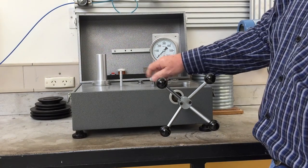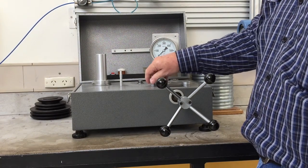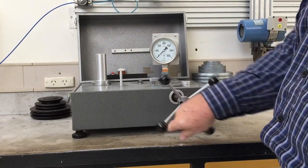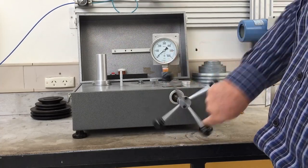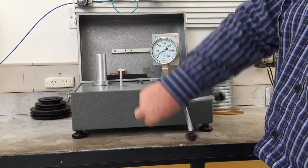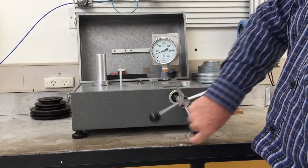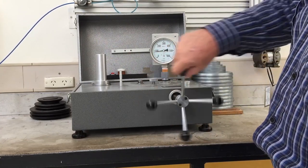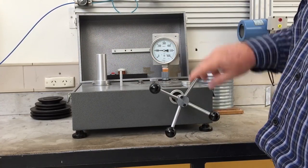Close the vent to start using the dead weight tester. Weights can be applied to the piston to increase the pressure reading. This dead weight tester has a minimum weight of the piston equivalent to 100 kPa.